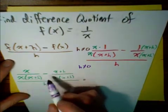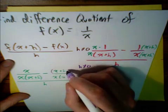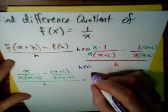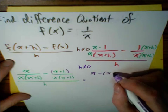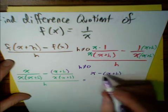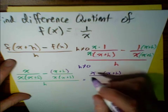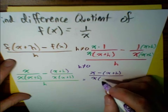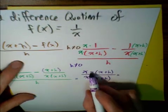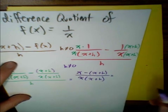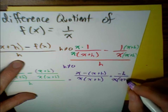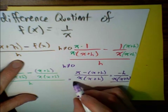Combining the two fractions, we subtract the second numerator: x minus the quantity x plus h. The x minus x cancels out, and we're left with negative h over x times the quantity x plus h, and this whole thing is over h.